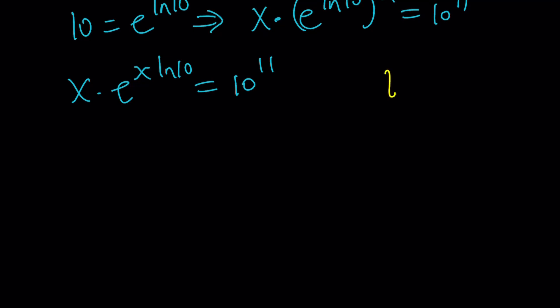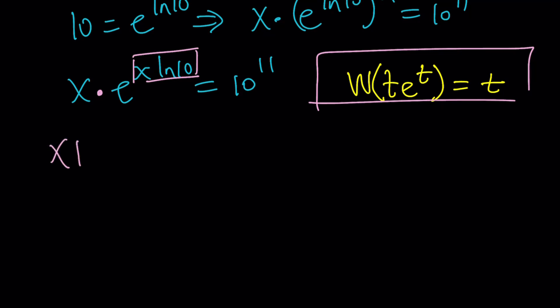And then switch this around so that I can kind of write it like this. x times, well, I think I'm almost done. So here's what I need to do. Multiply both sides by ln 10, because here's what I want to do. I want to get something like t e to the t, so I can apply Lambert's W function and get t as an outcome, which is going to be super nice, right?